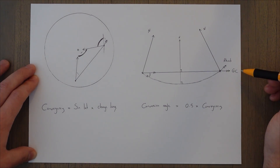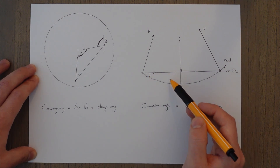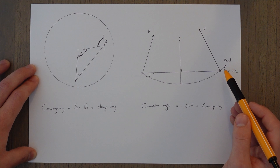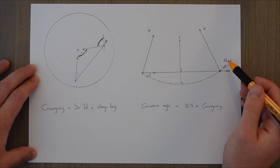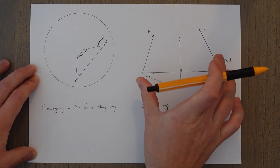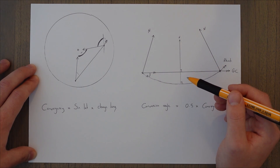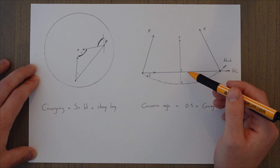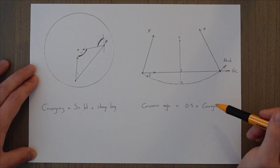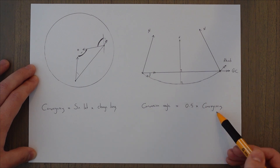Some other key points about the great circle and rhumb line: the rhumb line follows a constant track from point A to point B, while the great circle track is constantly changing. The only point at which these two track values are equal is at the mid-longitude between the two points — so the average track of the great circle is equal to the rhumb line track. The difference between the two at any other point will be the conversion angle.